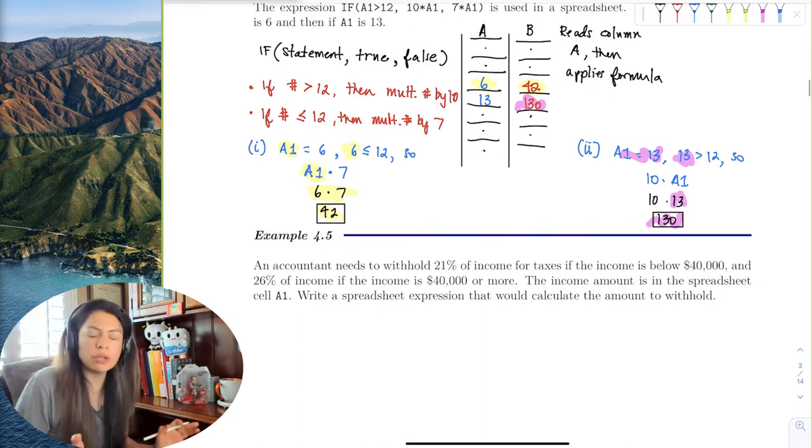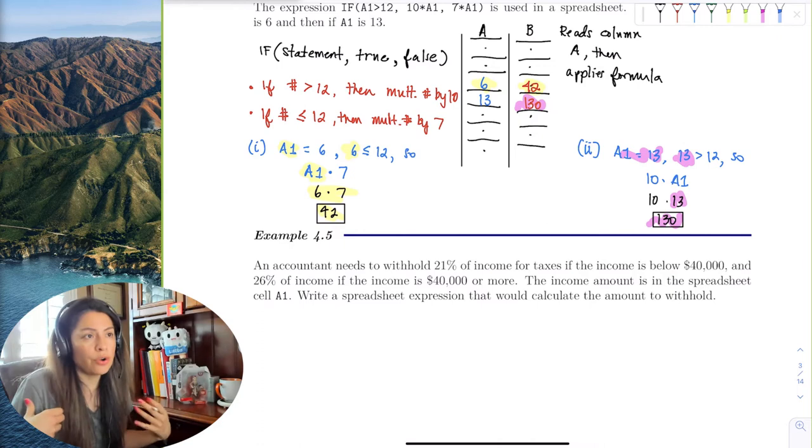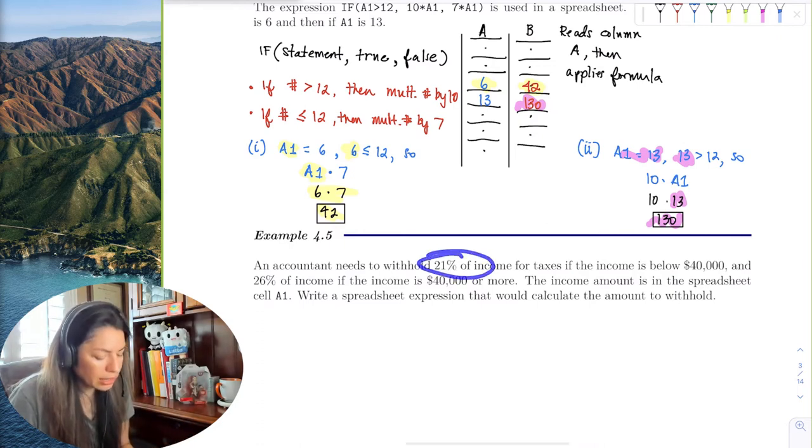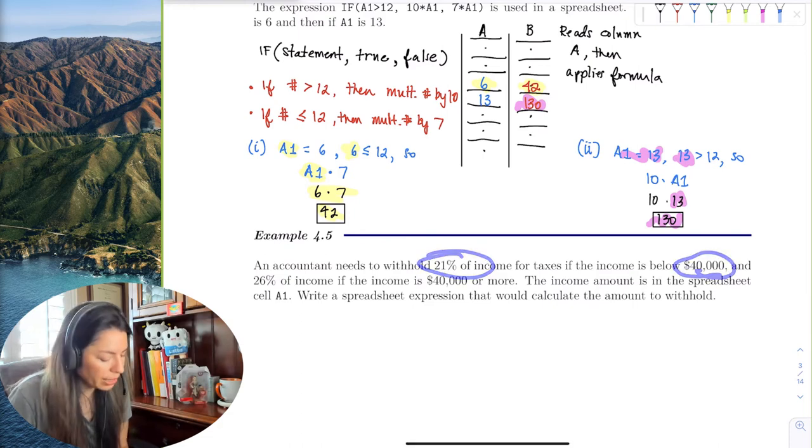If an accountant needs to withhold 21% of income taxes for income below $40,000, and 26% of the income for $40,000 or more...